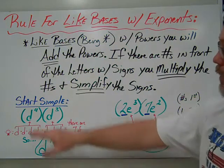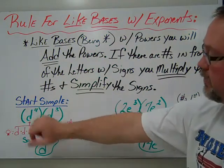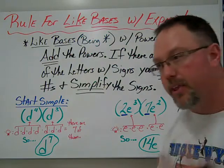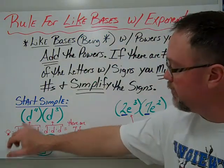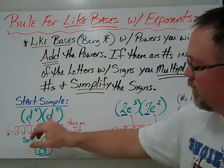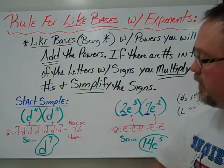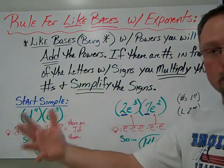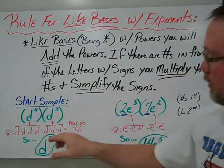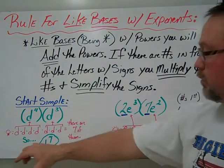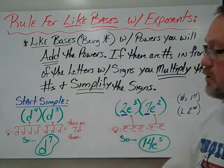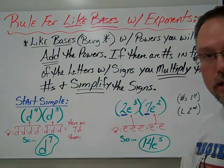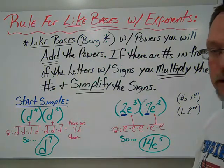Starting simple: we have d to the fourth times d cubed. You can think of it as having four d's and three d's. If you count up the total in expanded form, you end up with seven, giving you d to the seventh power — the seven tells us how many times d appears.